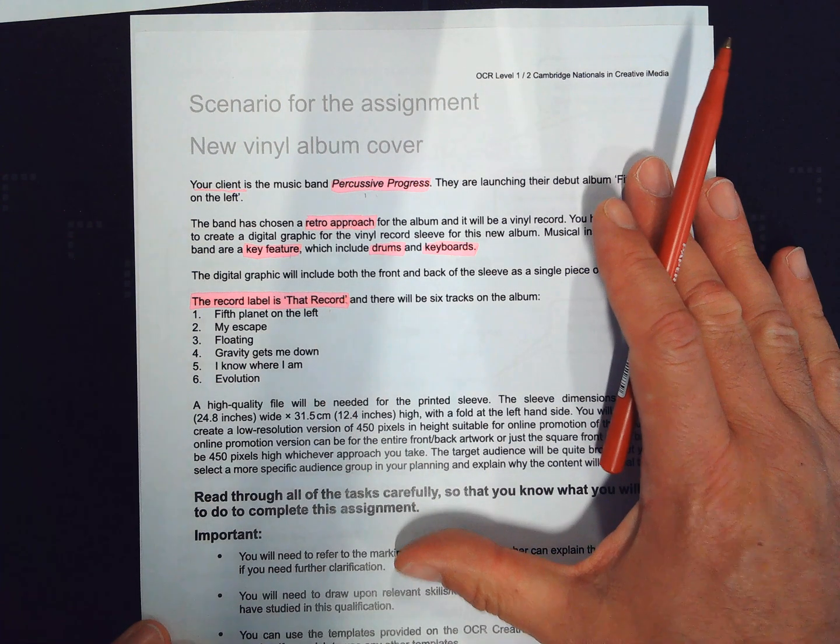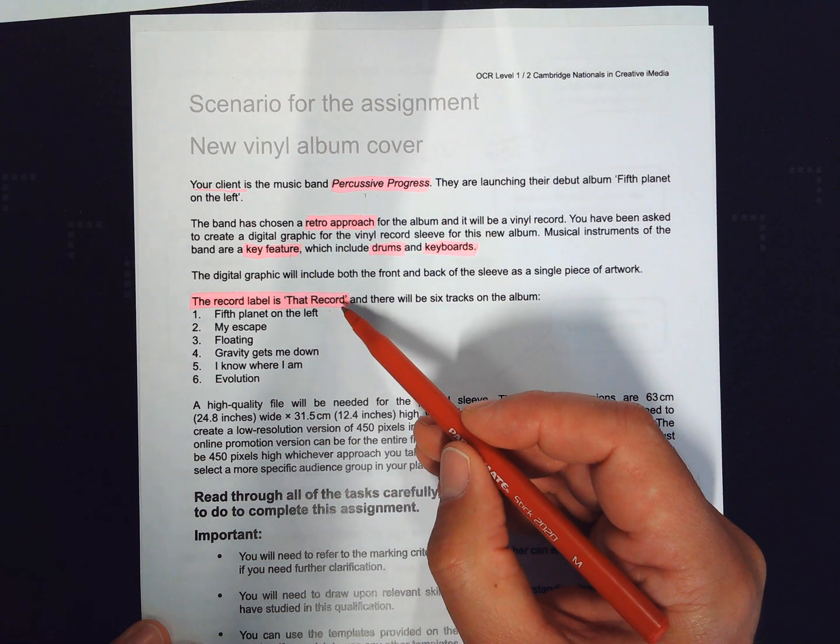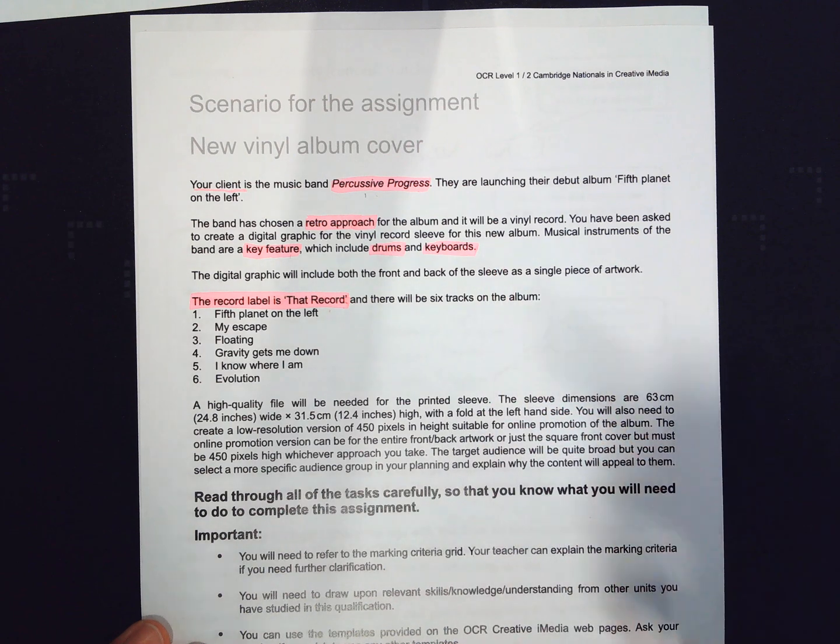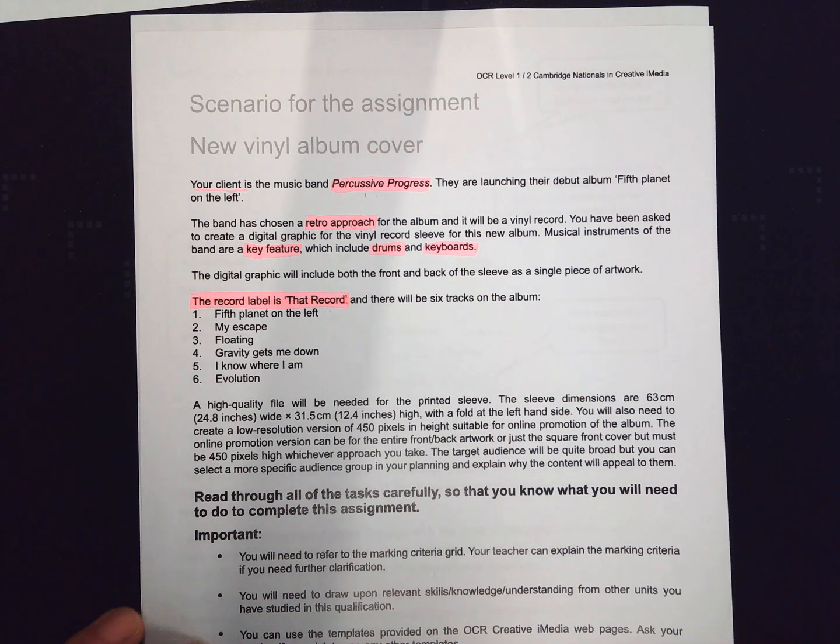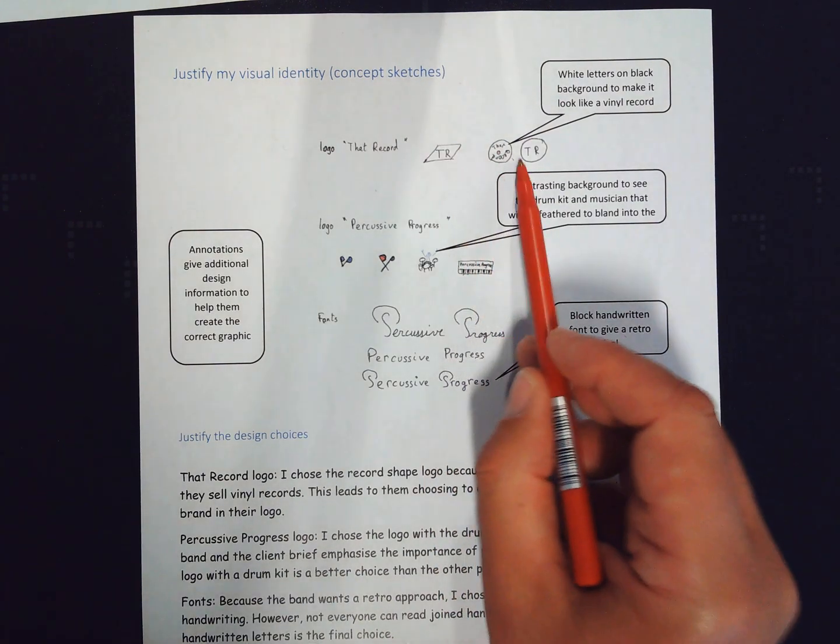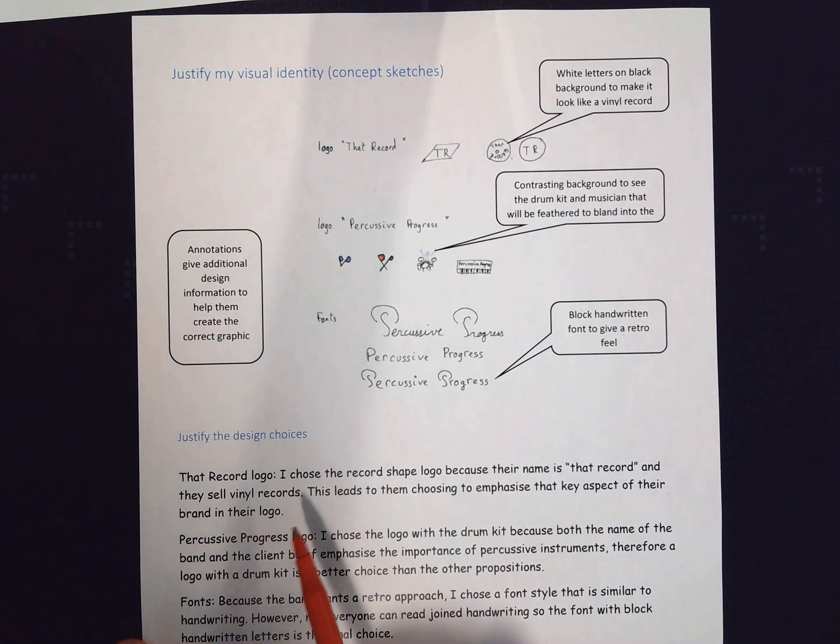So from this, I can create a logo for Percussive Progress, I can create a different logo for That Record, and I've got some information here that I can use when selecting the font for the main title. Here's the concept sketches, and I've got a choice of three ideas for the logos, and then four for the logo for Percussive Progress, and then different fonts over here.